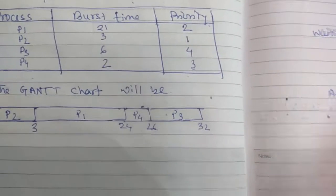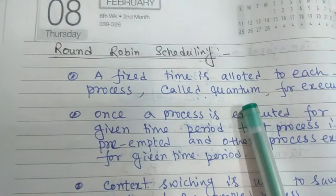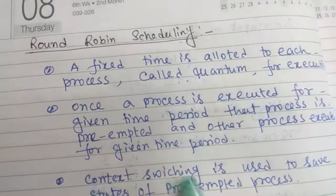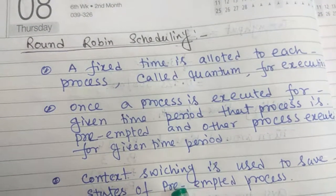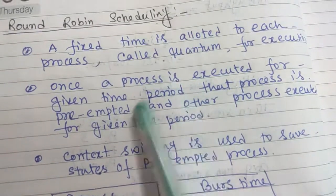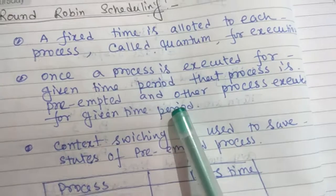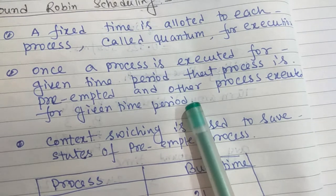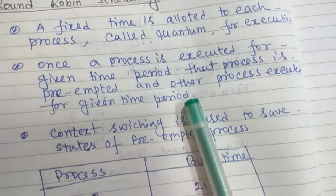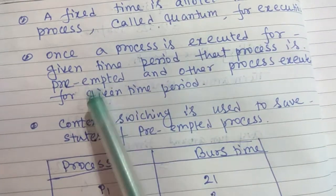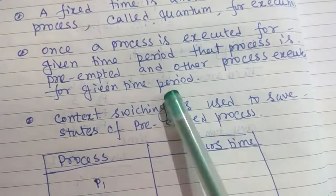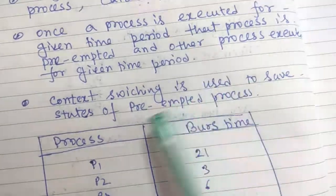Now we move to round-robin scheduling. In round-robin scheduling, a fixed time quantum is allocated to each process for execution. Once a process has been executed for the given quantum time, that process is preempted — meaning it stops execution — and another process is executed for the given time period. Context switching is used to save the state of the preempted process.